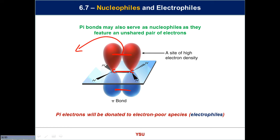Because pi electrons are weakly held, it is easy for them to be given to form a bond to something that needs help — some electrophile, some delta-positive species. Organic chemists think of a pi bond as a lone pair shared between two atoms: a lone pair sits on one atom, a pi bond is kind of two electrons shared between two atoms. They do the same job — both can be pushed from an area of high electron density toward an area of low electron density.